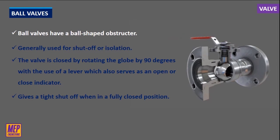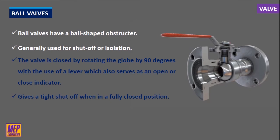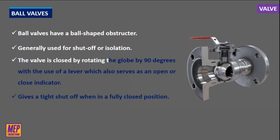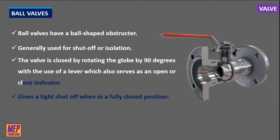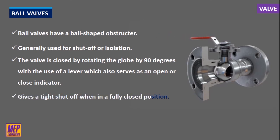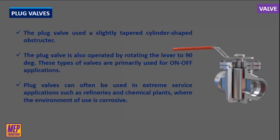Ball valves have a ball-shaped obstructor which is sandwiched between two cup-shaped seals. This type of valve is generally used for shutoff or isolation of the system. These valves are designed to be operated fully open or fully closed. The valve is closed by rotating the ball 90 degrees with the use of a lever, which also serves as an open or close indicator. The spherical plug gives precise control of flow and a tight shutoff when in the fully closed position.